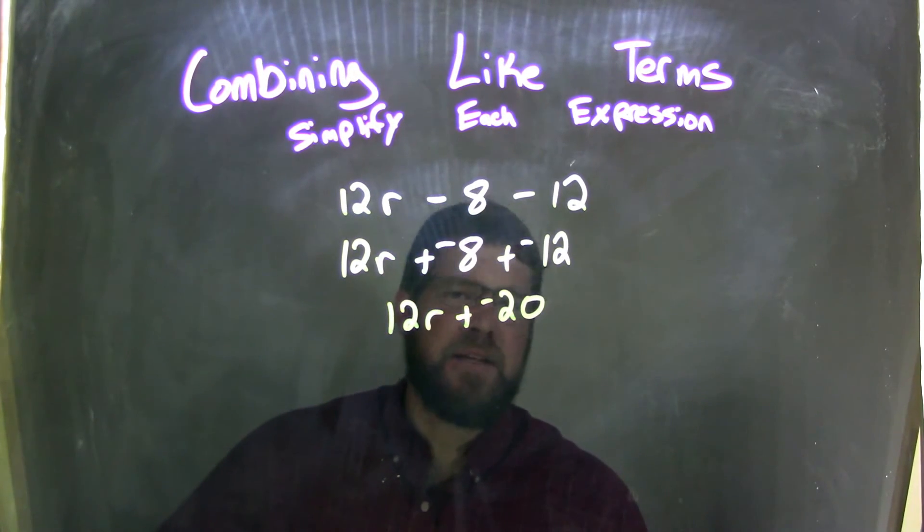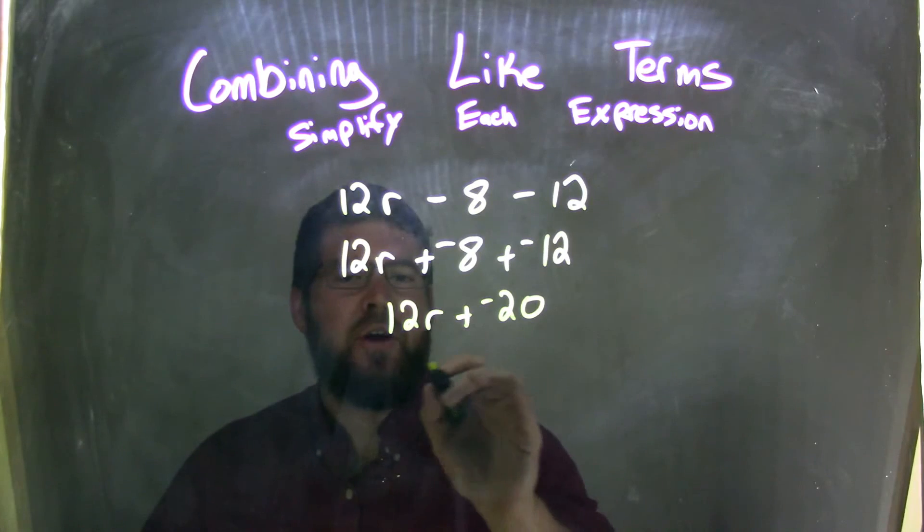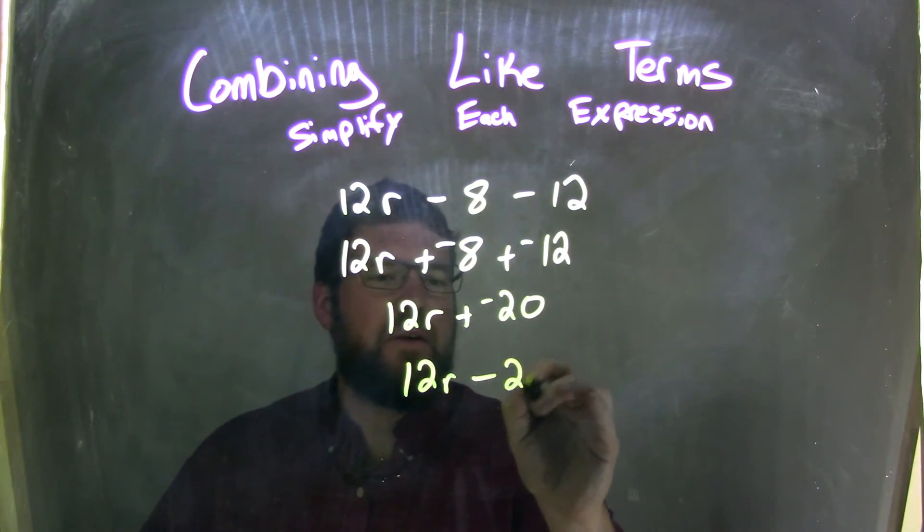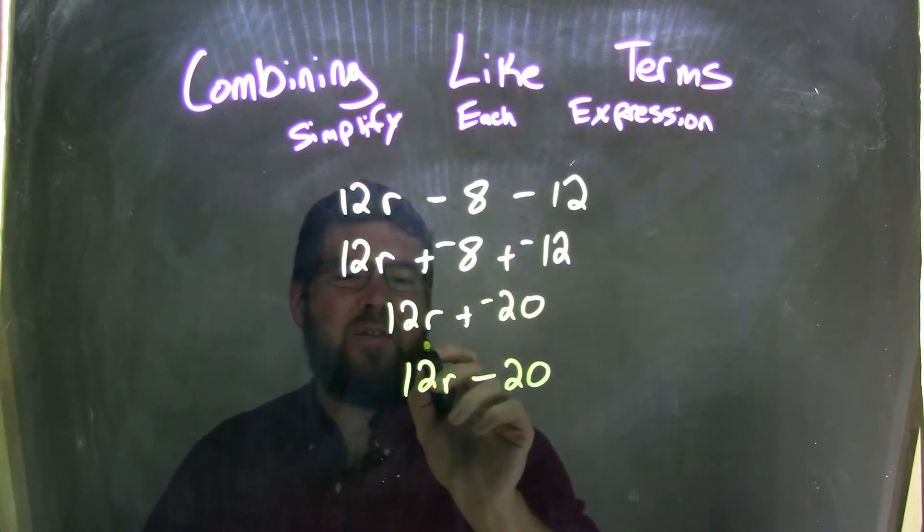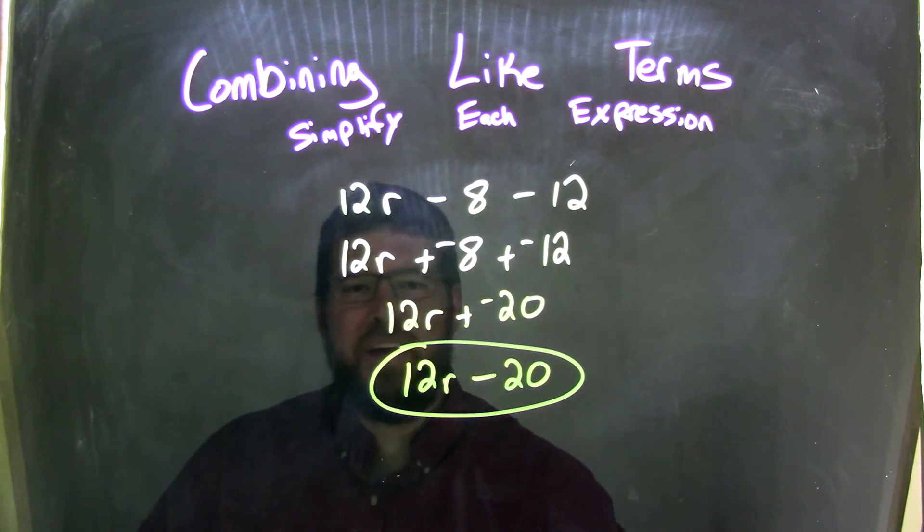Now, we can clean this up because adding a negative is the same thing as subtraction. That's nicer to look at. So, we have 12R minus 20, and that is our final answer. These are not like terms. We cannot combine them.